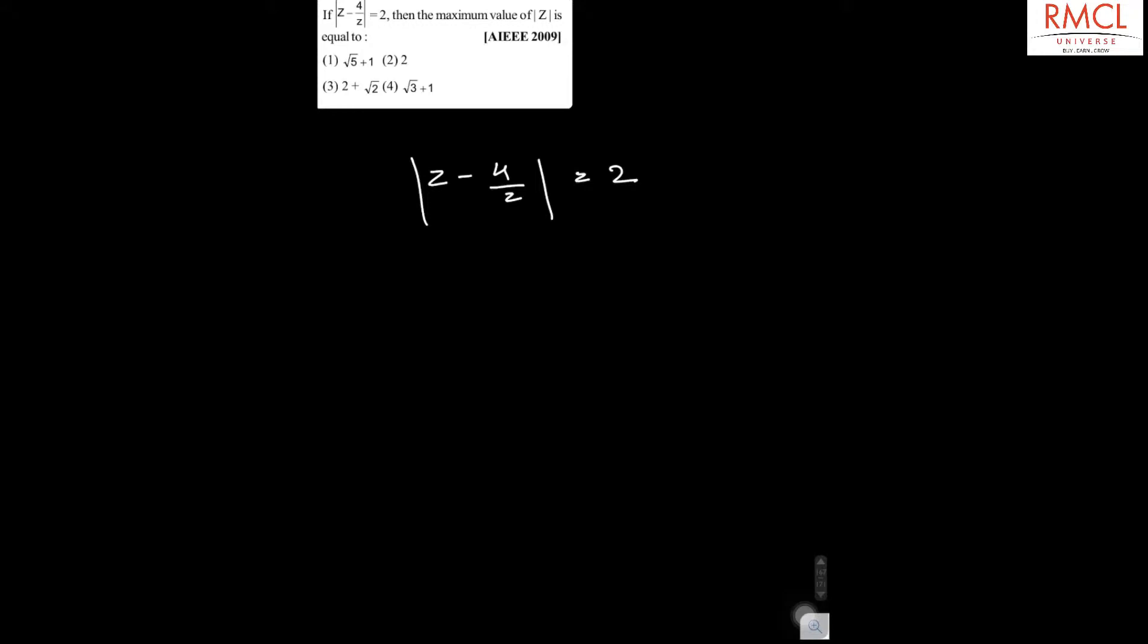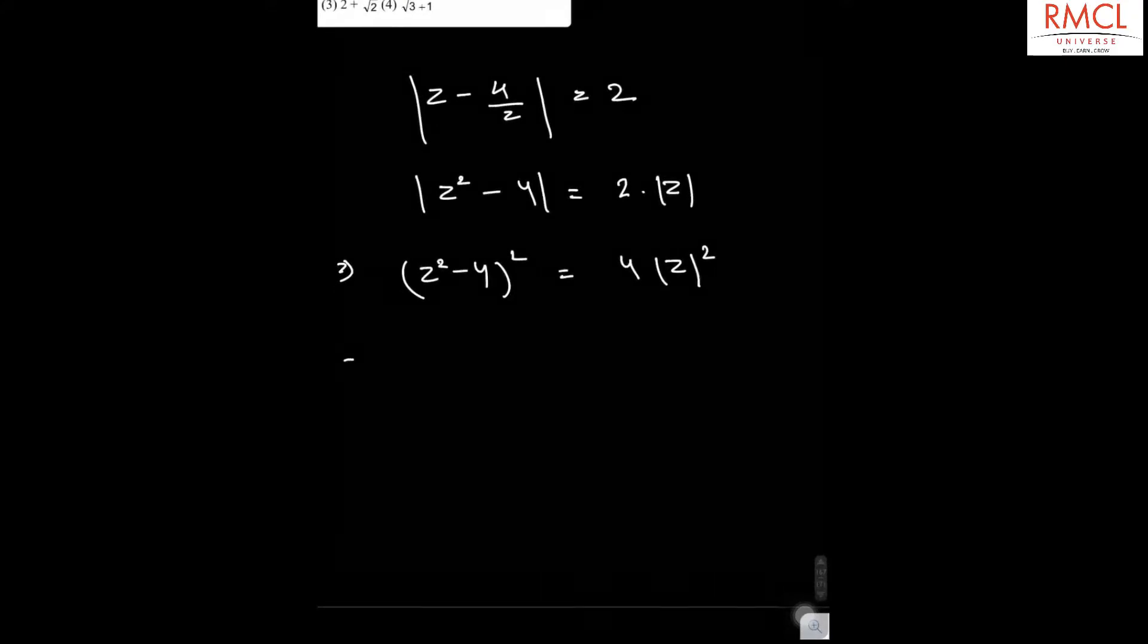So, this can be written as mod of z square minus 4, which is equal to 2 mod z. Now, if you square both sides, then you will have z square minus 4 whole square equal to 4 mod z square.